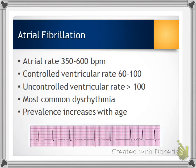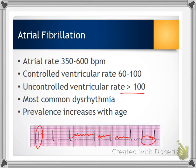For atrial fibrillation, the atrium is fibrillating — basically quivering — as you can see here. The atrial rate is 350 to 600. Our ventricular rate (QRS) can be controlled: if less than 100 beats per minute, we call it controlled atrial fibrillation; anything greater than 100 is uncontrolled atrial fibrillation. This is considered the most common dysrhythmia, and it increases with age. It most often occurs in patients with coronary artery disease, hypertension, and heart failure.